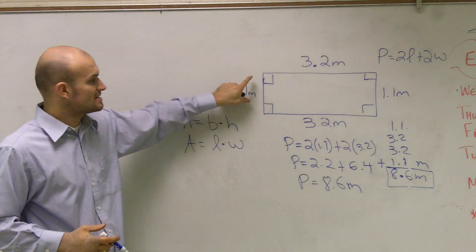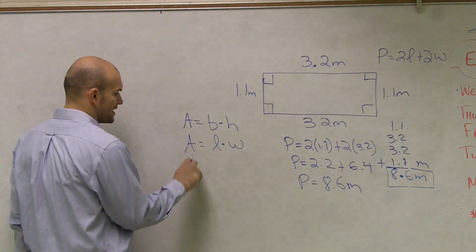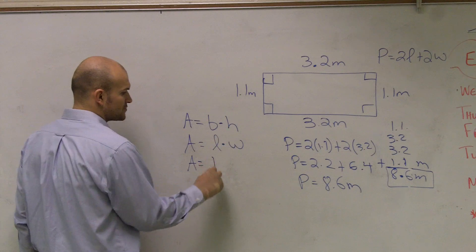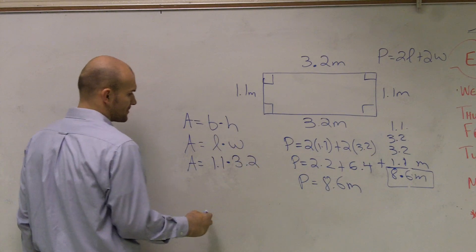Because one side is the length, the other side is going to be the width. So if I plug these in, I get area equals length, which is 1.1, times my width, which is 3.2. Well, to multiply these out without a calculator...